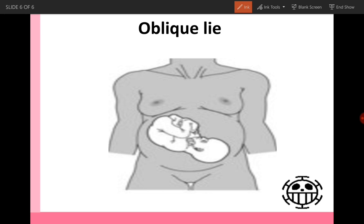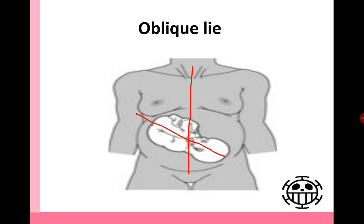The oblique lie means that the longitudinal axis of the mother, which is the maternal spine, makes an acute angle with the longitudinal axis of the fetus, which is the fetal back. So we call it oblique lie. Thank you.